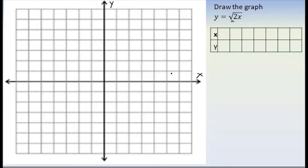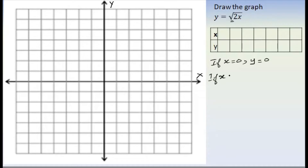We can see how when x is equal to 0, the formula gives x equals 0. Then 0 is equal to 0. If x is equal to the root of 2, then x is equal to 2.